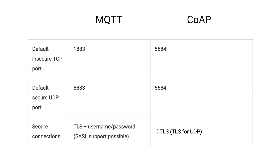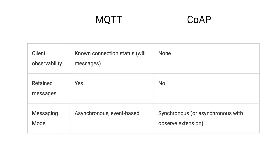The protocol allows client-server applications to communicate in a way designed to prevent eavesdropping, tampering, or message forgery. A significant advantage of MQTT over CoAP is client observability — MQTT allows the client state to be monitored via notifications. For instance, when a client unexpectedly disconnects, users can be notified automatically. There is no client observability in CoAP.